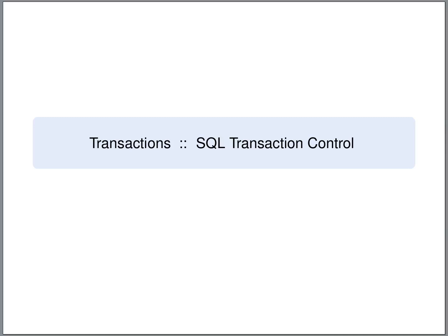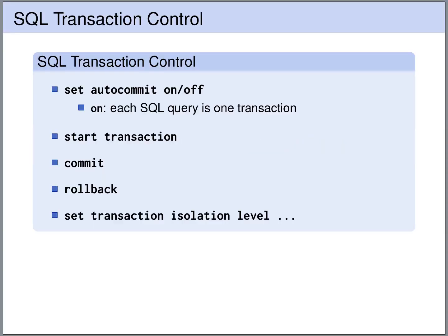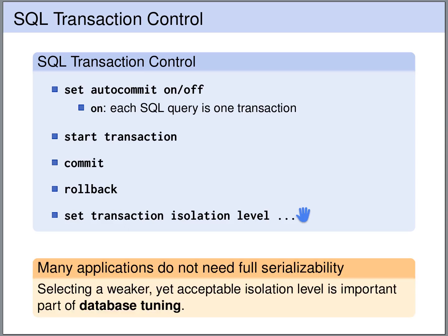SQL offers different commands for transaction control, including the ability to choose the isolation level. We can set autocommit to on or off — if on, each query is treated as a separate transaction. We can explicitly start a transaction, commit it, or roll it back. Finally, we can set the isolation level for a transaction. For many applications, full serializability is not needed — a weaker isolation level suffices, and choosing a weaker isolation level is an important part of database tuning, since it allows more concurrency and better performance.